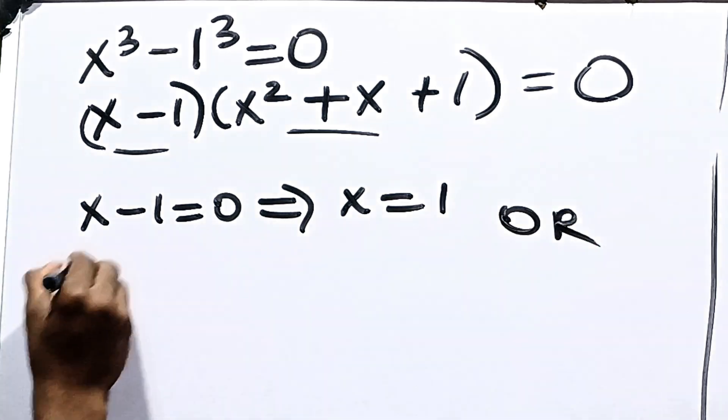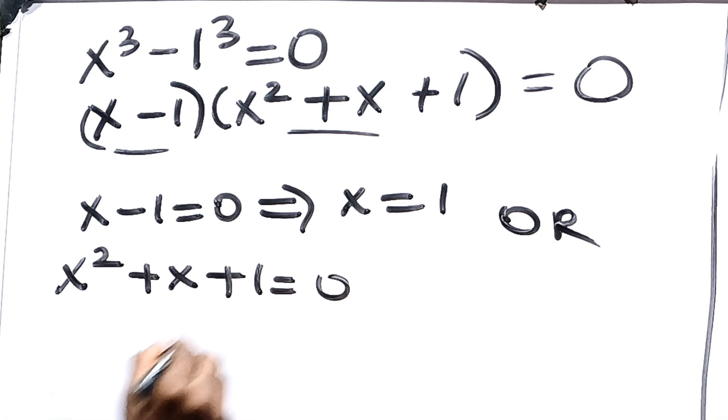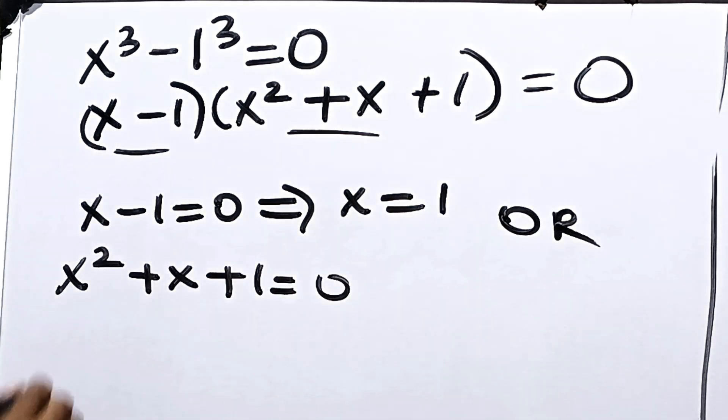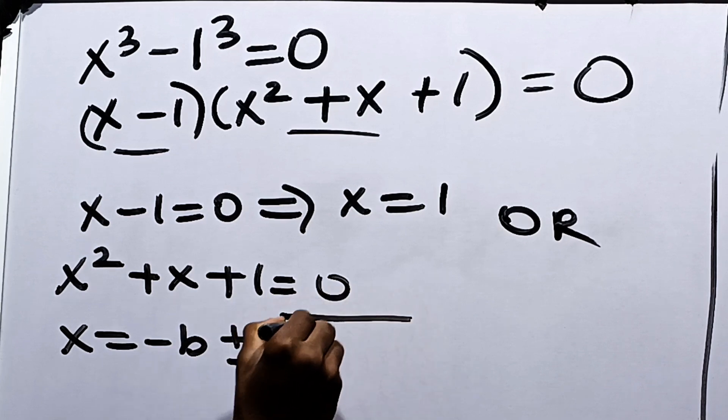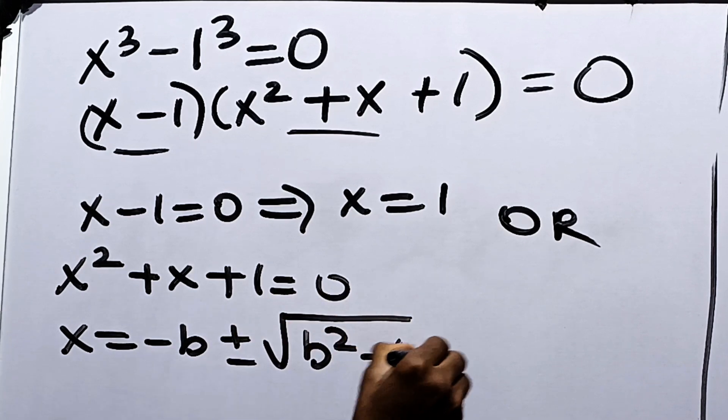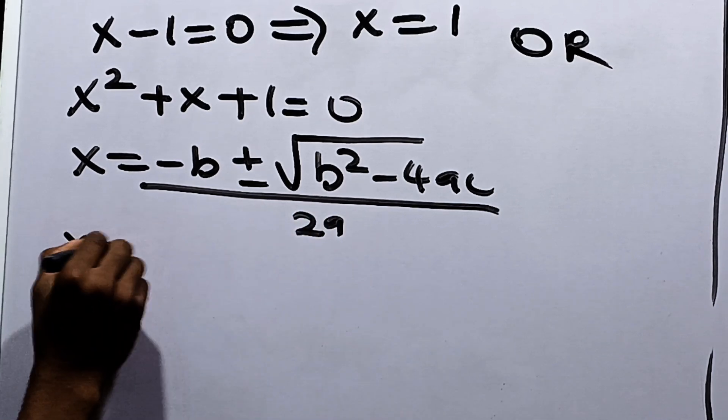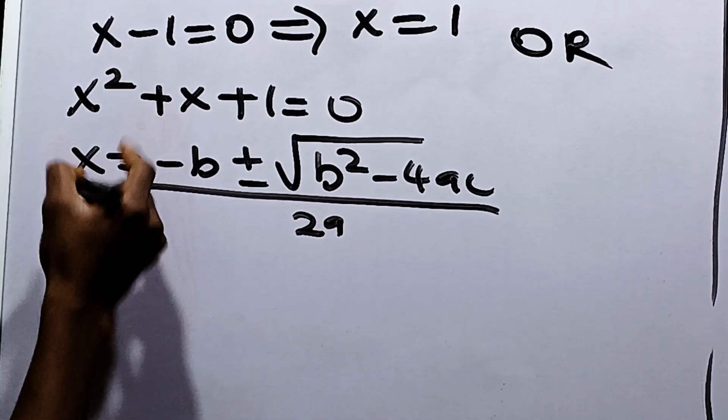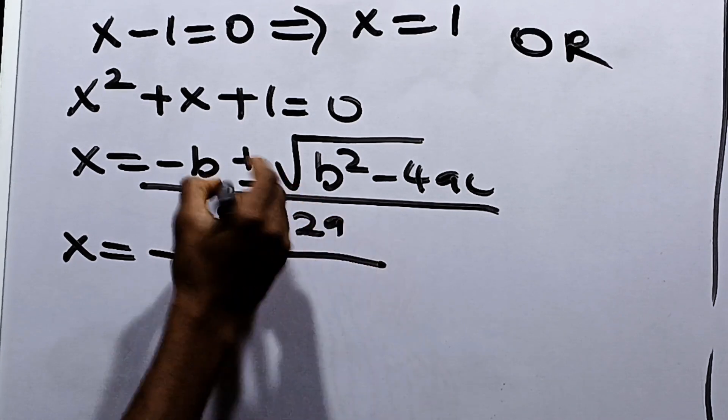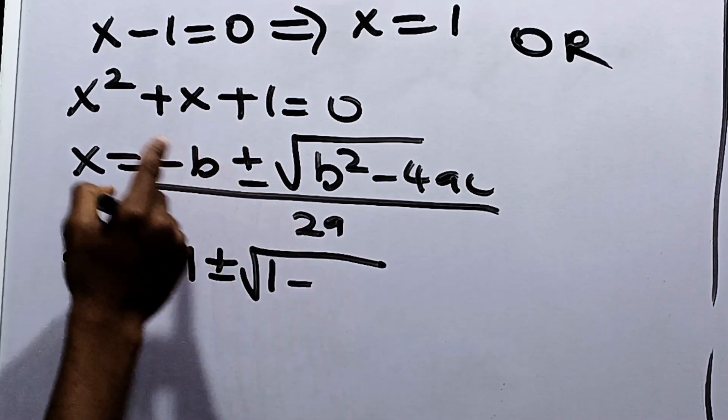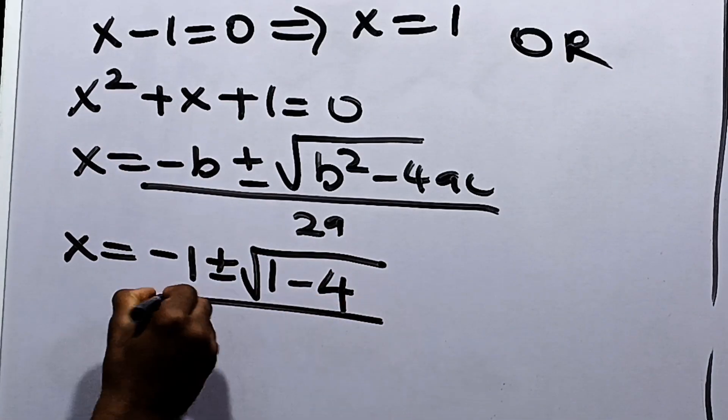Or, we have x squared plus x plus 1 is equal to 0. So we need the quadratic formula to solve this. We have that x here is equal to minus b plus or minus square root of b squared minus 4ac all over 2a. Now, we have that x here will be equal to minus 1 plus or minus square root of 1 squared is 1 minus 4 times 1 times 1 is 4 all over 2 times 1, which is 2.